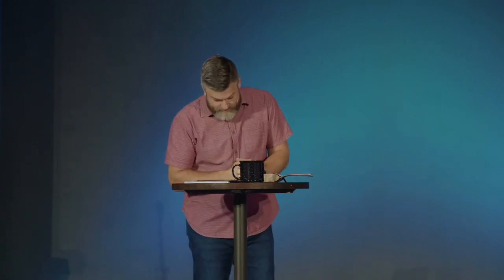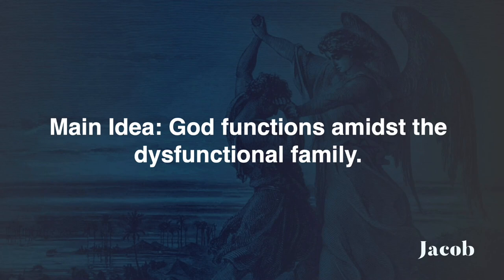We see in the Scriptures that Rebecca was a schemer, a deceiver. Esau lived for himself. Jacob lived for himself. And in the midst of all of this, God preordained Jacob to get the blessing. I'm going to press in on this truth today — that God functions amidst the dysfunction. The beauty of the gospel is that God still moves amidst the dysfunctional family.